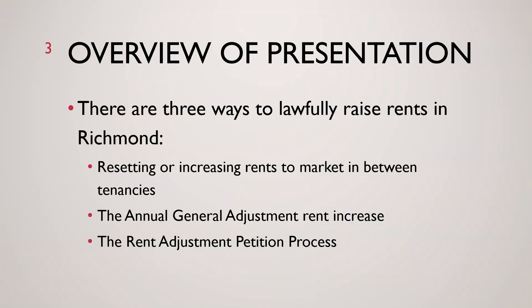Let's jump straight into how to increase rent in Richmond for controlled rental units. A controlled rental unit is a multi-unit property that was built with permits prior to February 1st of 1995. Single-family homes — a single dwelling on a parcel — condominiums, and post-February 1st, 1995 construction with permits are exempt from the rent control provisions of the Richmond Rent Ordinance. However, they are still covered by the requirement to have just cause to terminate a tenancy.